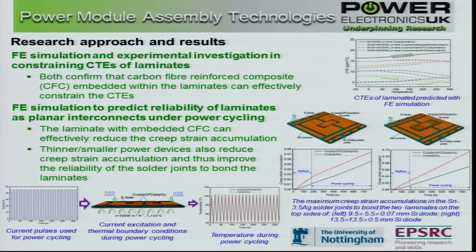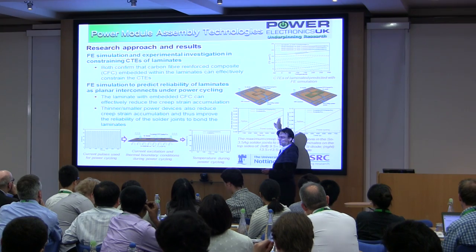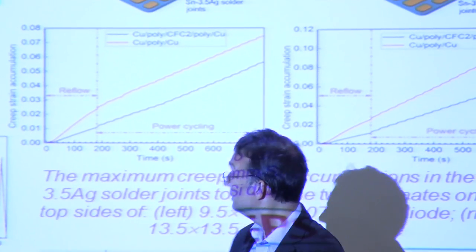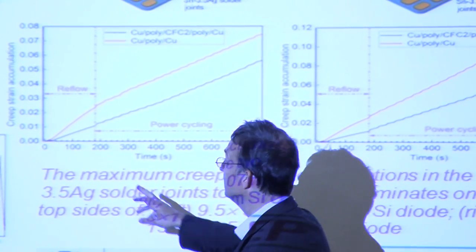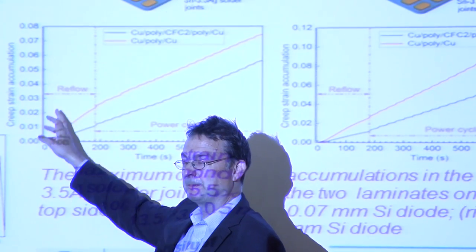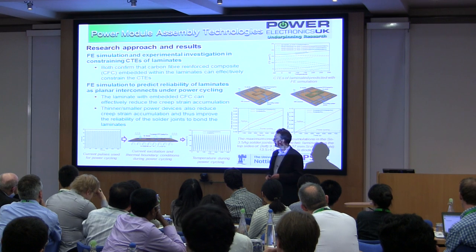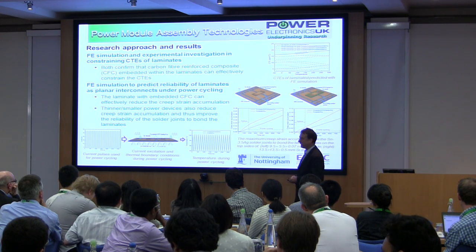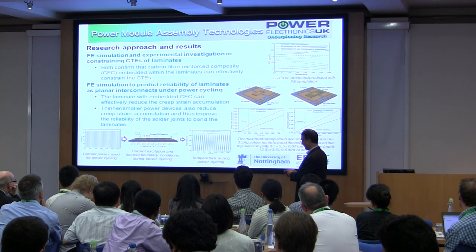Lots of results here — if you look at these curves and compare the black one, which is the new carbon composite laminates, with perhaps a more conventional technology, which is the red one: what this axis shows you is creep-strain accumulation, or stress being developed within the package. Clearly the new technologies look promising in giving higher performance for the overall packaged device.